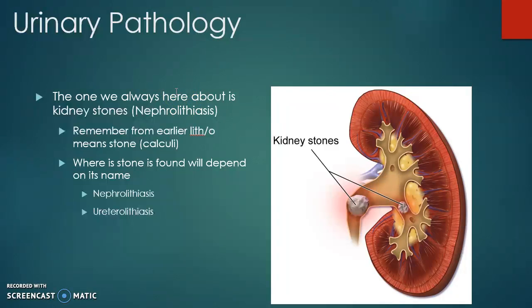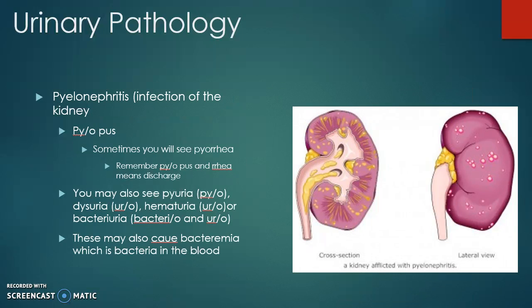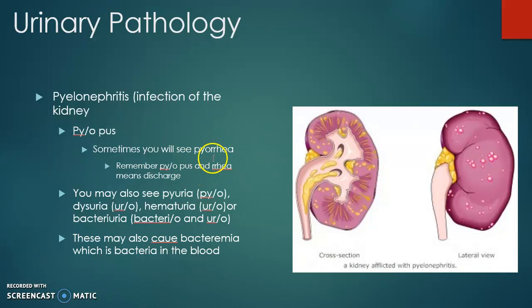Remember we learned about lithiasis with the gallbladder — cholelithiasis. Now we have nephrolithiasis. Depending on where the stone is found, the name changes. For example, a stone in the kidney is nephrolithiasis, while a stone in the ureter is ureterolithiasis. Pyelonephritis is an acute infection of the kidney. Pyo is the combining form for pus. Pyuria means discharge of pus in the urine.